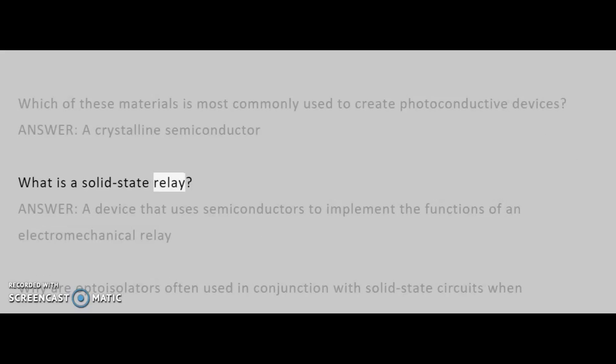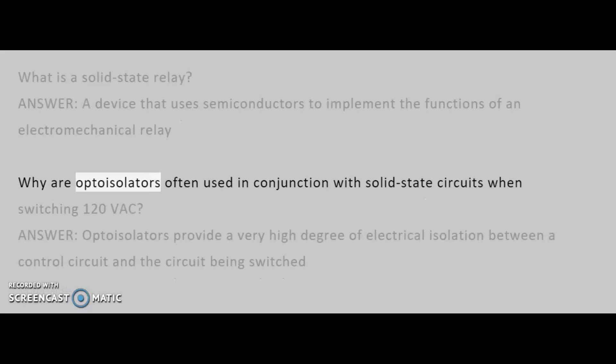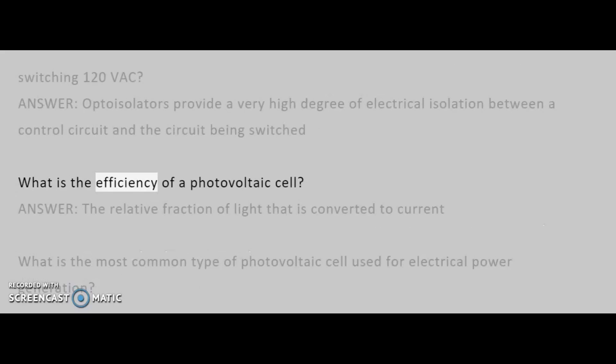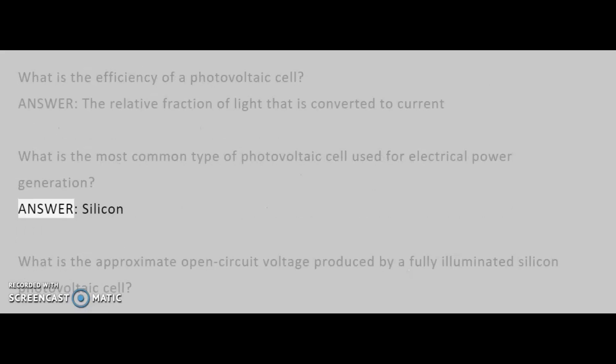What is a solid-state relay? Answer: a device that uses semiconductors to implement the functions of an electromechanical relay. Why are optoisylators often used in conjunction with solid-state circuits when switching 120 VAC? Answer, optoisylators provide a very high degree of electrical isolation between a control circuit and the circuit being switched. What is the efficiency of a photovoltaic cell? Answer: the relative fraction of light that is converted to current. What is the most common type of photovoltaic cell used for electrical power generation? Answer: silicon.